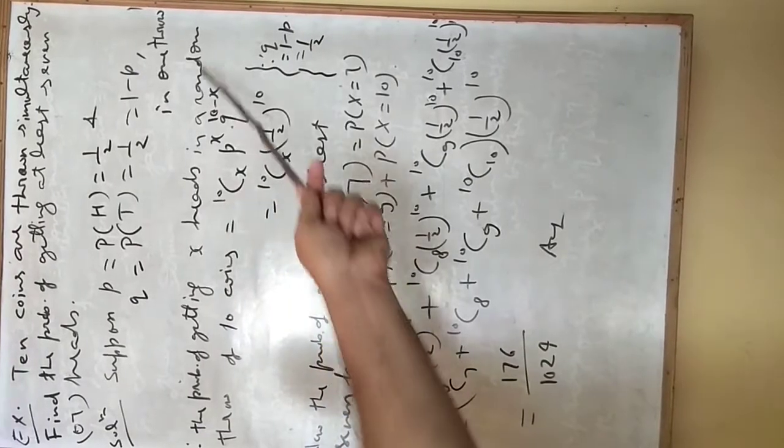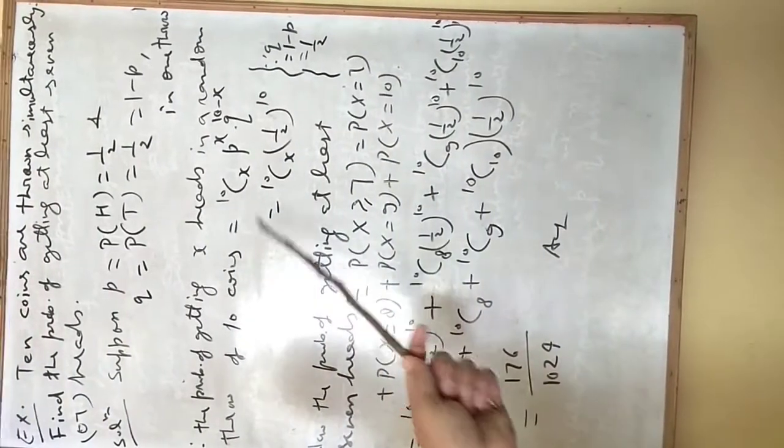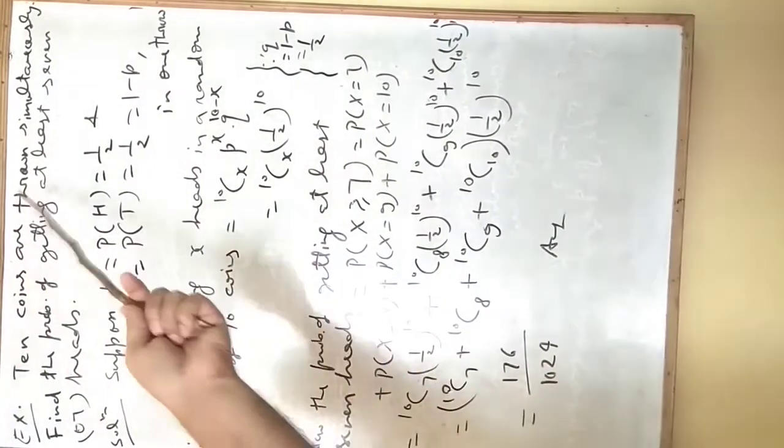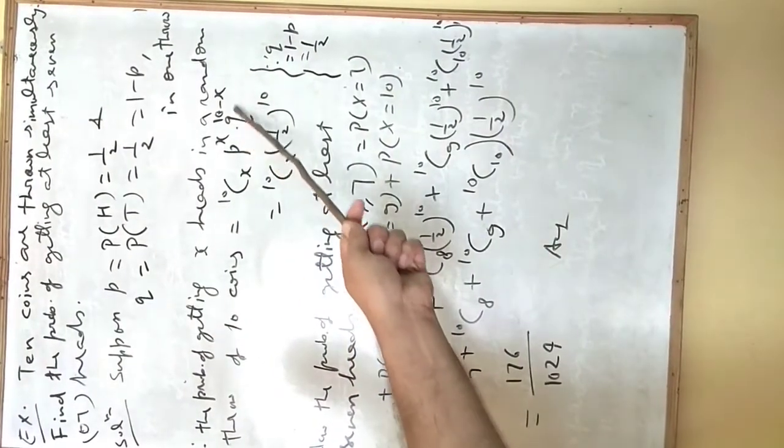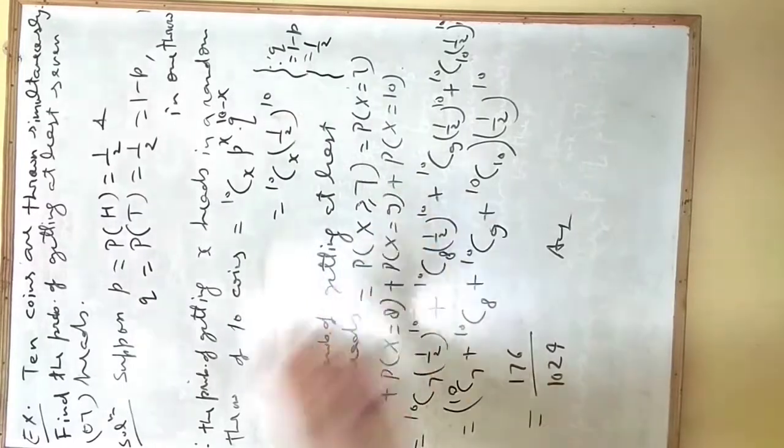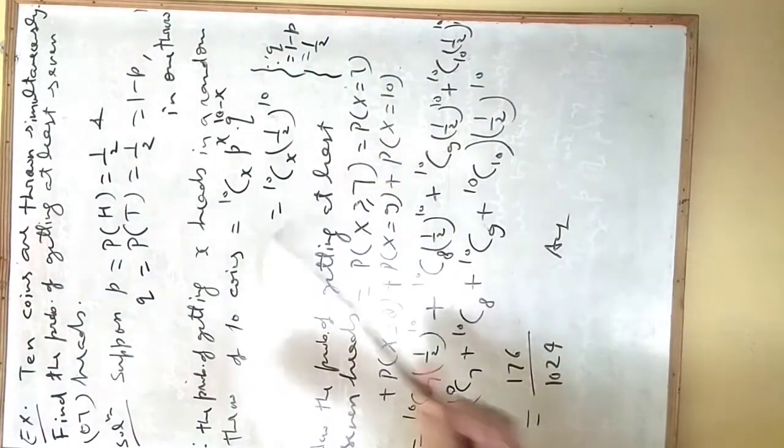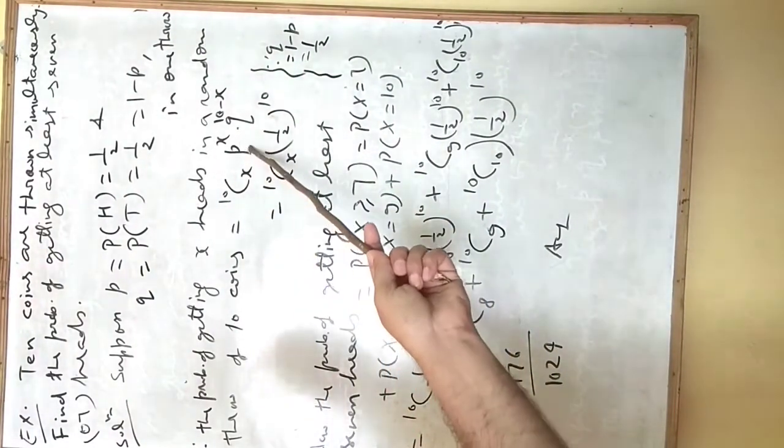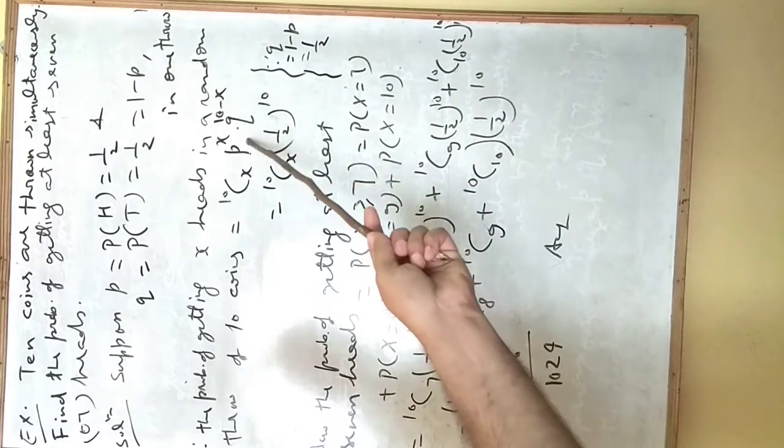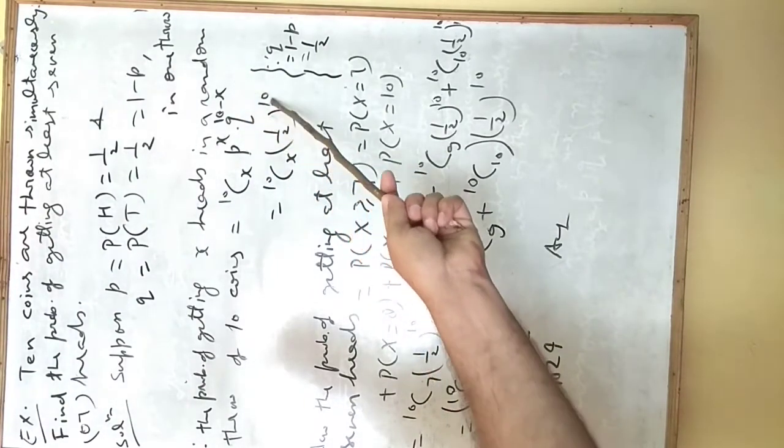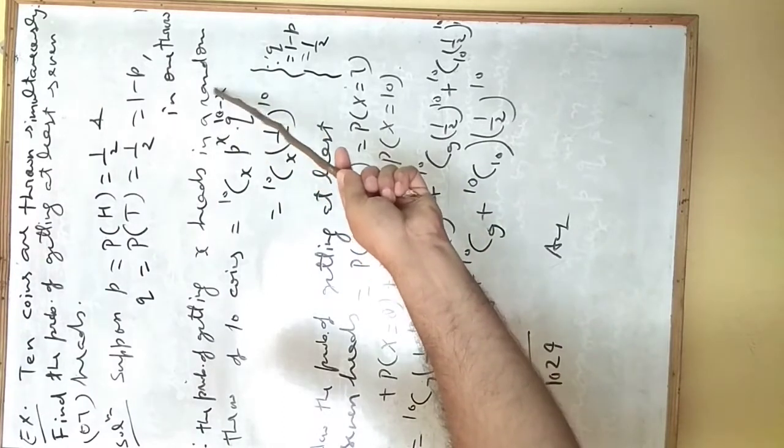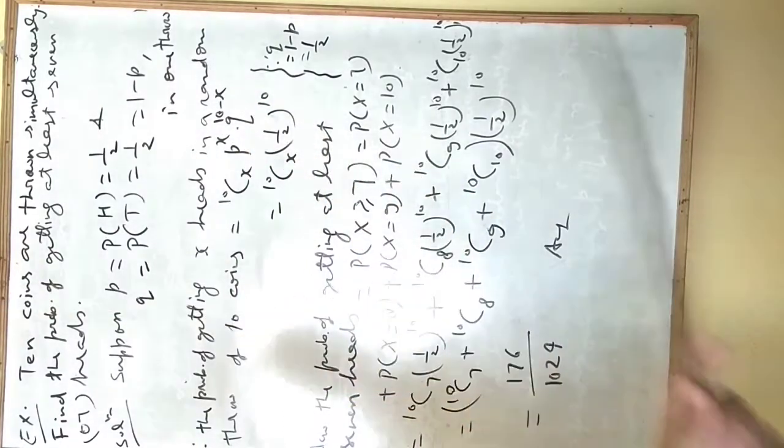Therefore, the probability of getting x heads in a random throw of 10 coins, we are throwing 10 coins simultaneously, so this will be 10Cx times p to the power x times q to the power n minus x, as per our binomial distribution. This is 10Cx, p is 1 by 2, q is 1 by 2, so 1 by 2 to the power x times 1 by 2 to the power 10 minus x. This will be 1 by 2 to the power 10, since x plus 10 minus x, the minus x and plus x cancel each other.